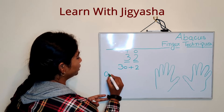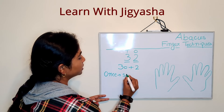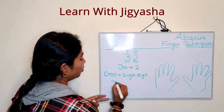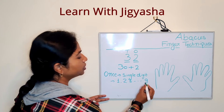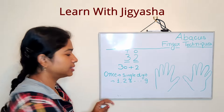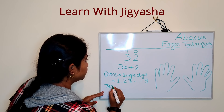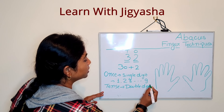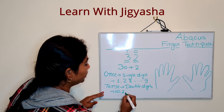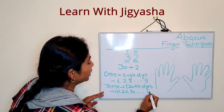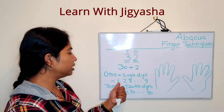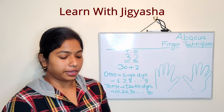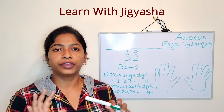In short, ones are single digits — like 1, 2, 3, up to 9. Tens are double digits — like 10, 20, 30, up to 90. I have written only these numbers because I am going to represent them on my fingers while doing abacus using our hands.